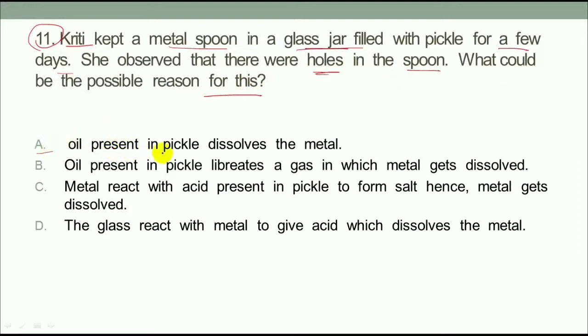Option A: oil present in pickle dissolves the metal. Option B: oil present in pickle liberates a gas in which metal gets dissolved. Option C: metal reacts with acid present in pickle to form salt, hence metal gets dissolved. Option D: the glass reacts with metal to give acid which dissolves the metal.